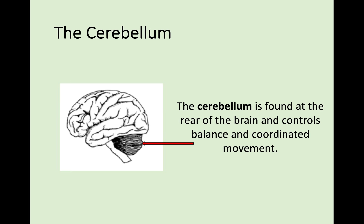Finally we're going to look at the cerebellum, which in this diagram is the dark area towards the bottom right. Be careful because cerebellum does sound a bit like cerebrum — try not to get them mixed up. The cerebellum is found at the rear of the brain and it coordinates your balance and coordinated movement. You need to know where all three of these parts are, what they're called, and what they do.